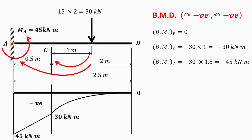For bending moment at point A, consider all forces on the right hand side of A. The perpendicular distance is 1.5 meters (1 plus 0.5), so 30 into 1.5 gives 45 kilonewton meter, and since it is clockwise it is negative. From B to C there is a parabolic distribution for the UDL, and then a straight line for the rest. The support offers a reaction moment of 45 kilonewton meter in the opposite direction.